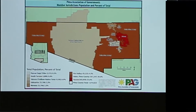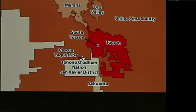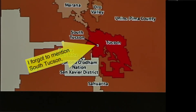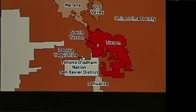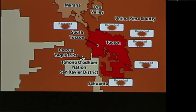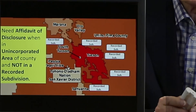Here's a map of Pima County. You can see the city of Tucson in red, Marana and Oro Valley above that, and the whole brown area — the unincorporated area of Pima County in and around Tucson. Sawarita in the southern portion is also a municipality. If the property lies within any of the cities, an affidavit of disclosure is not required. If it lies in any recorded subdivisions — and there are many in the unincorporated area of Pima County — an affidavit of disclosure is not required either. However, if it falls outside of the city and outside of any recorded subdivisions, then the affidavit of disclosure is required.